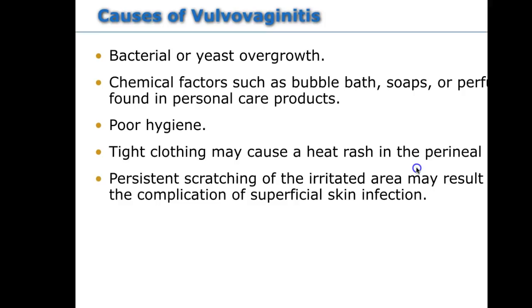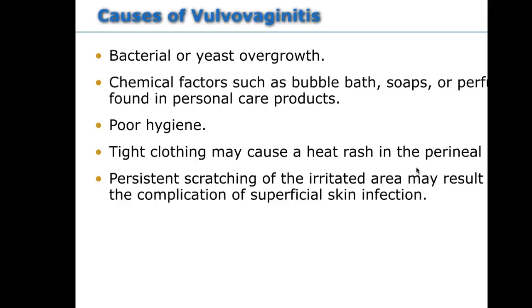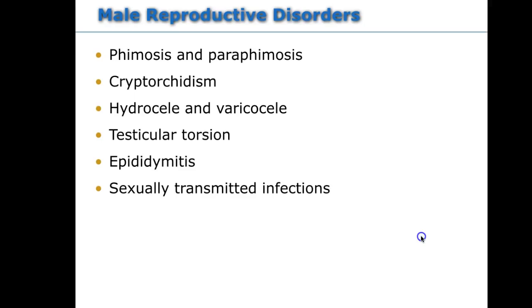Vulvovaginitis can be a yeast infection, irritation from wet clothing, poor hygiene, or bubble baths — basically anything causing inflammation in the vaginal area of females. PID usually presents with abdominal pain, discharge, fever, pain with menstrual cycles, or abnormal uterine bleeding. Long-term complications of PID can result in infertility if not treated.